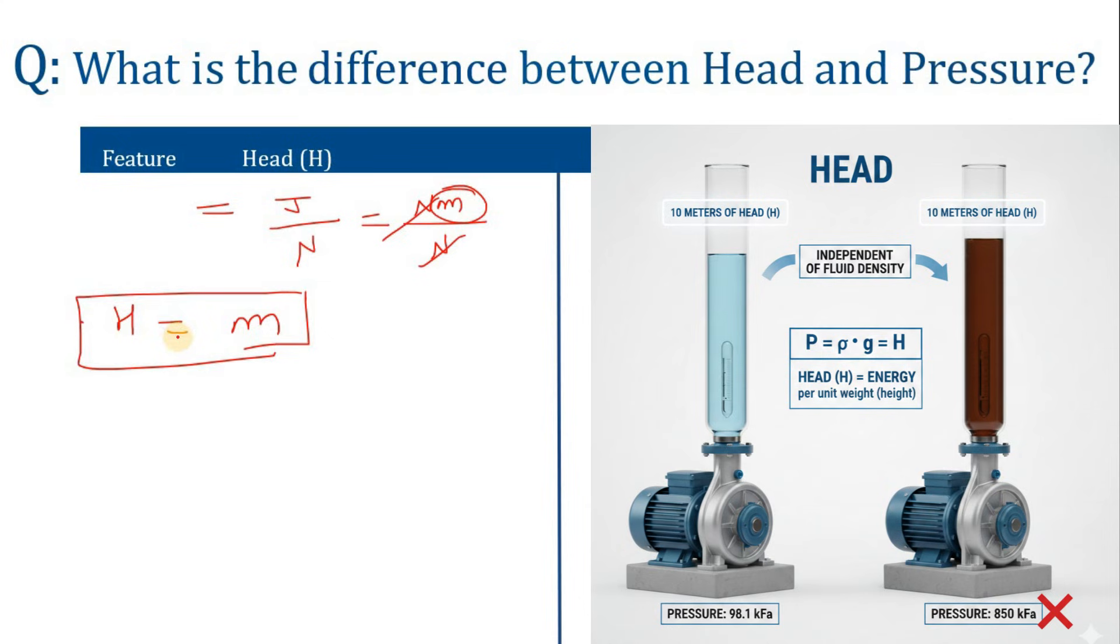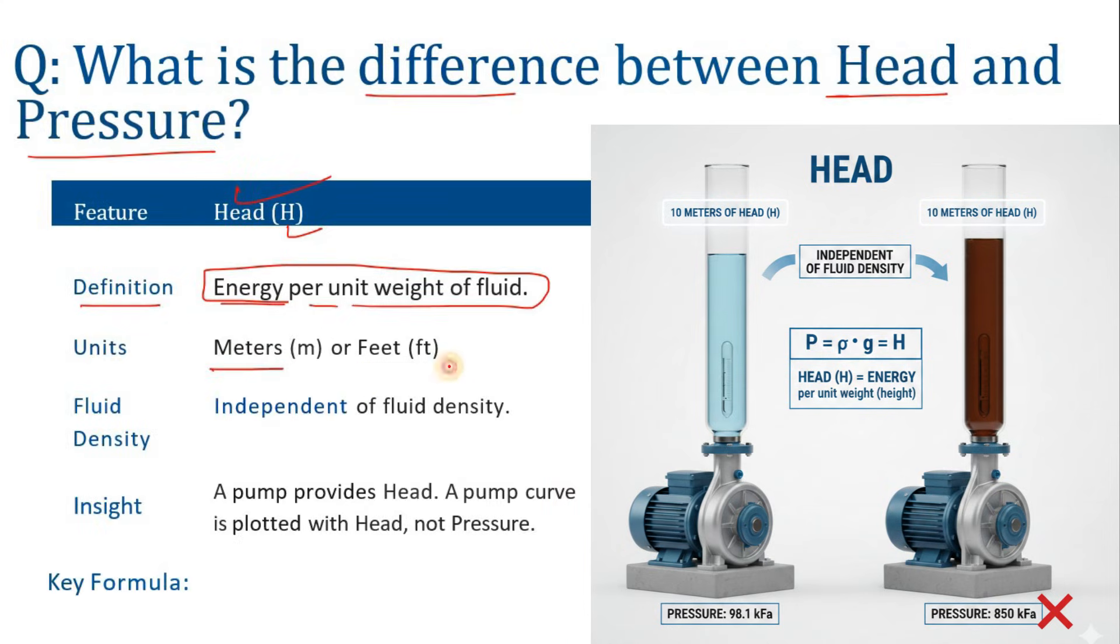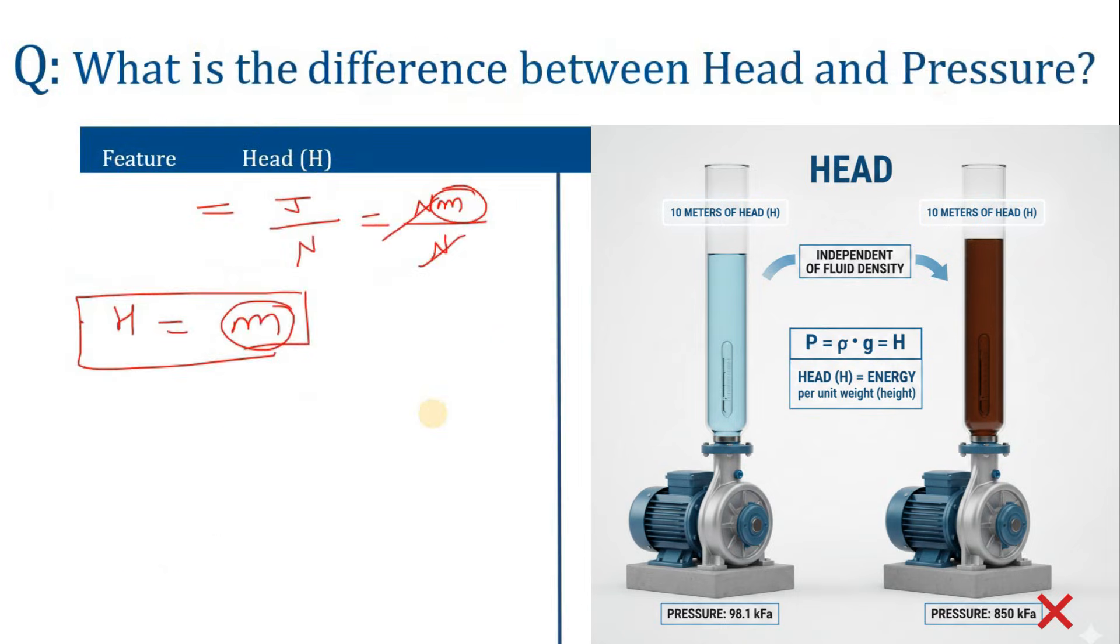So the unit of head is meter or feet, but SI unit is meter. It is independent of fluid density, means your fluid density will not impact the head. What is the meaning of this?